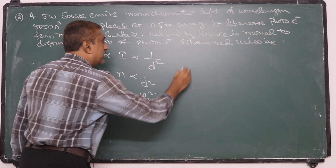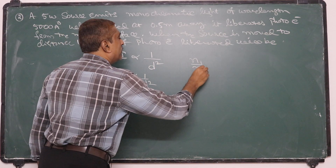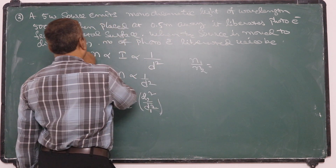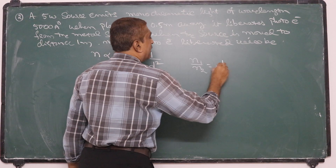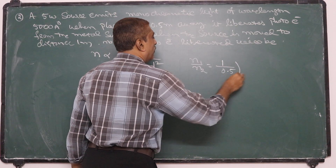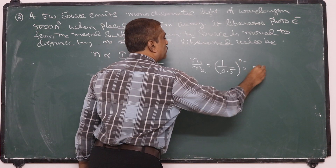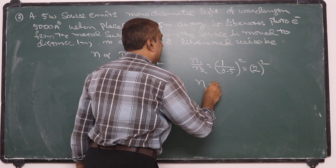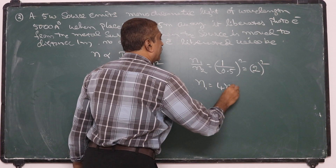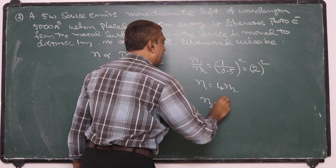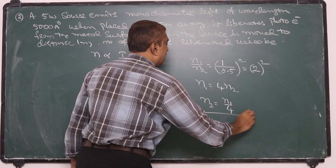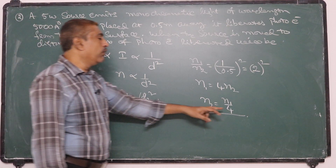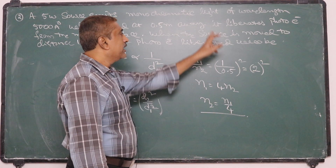So n₁/n₂ = (1 meter / 0.5 meter)² = 2² = 4. Therefore n₁ = 4n₂, or n₂ = n₁/4. The number of photoelectrons decreases to one-quarter of the initial value.